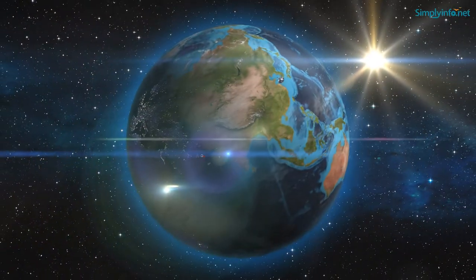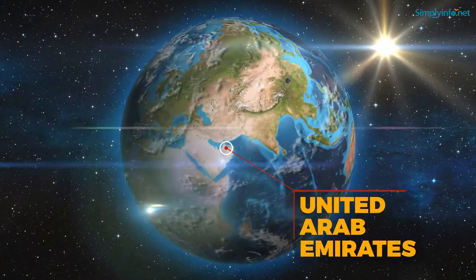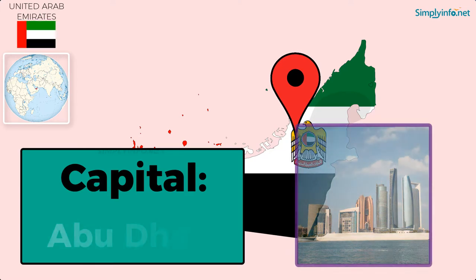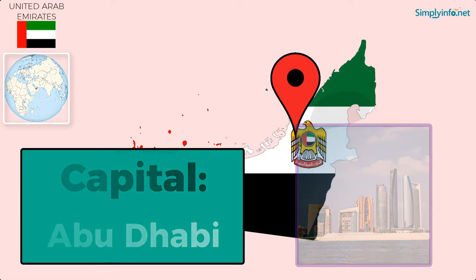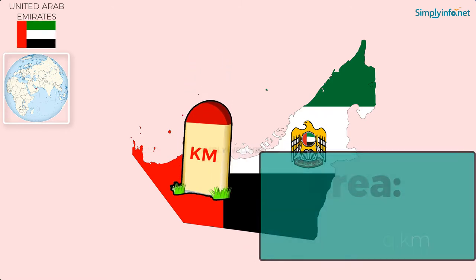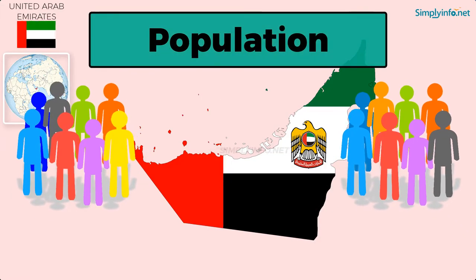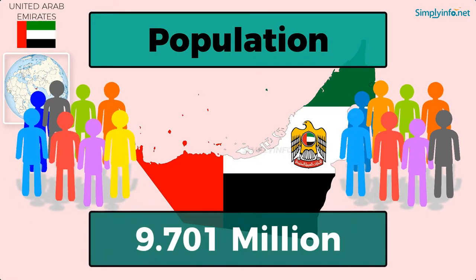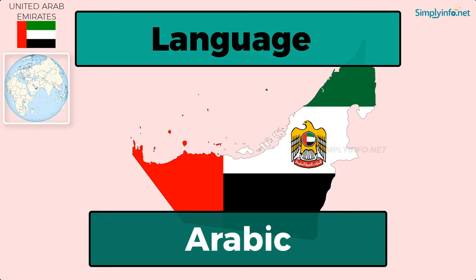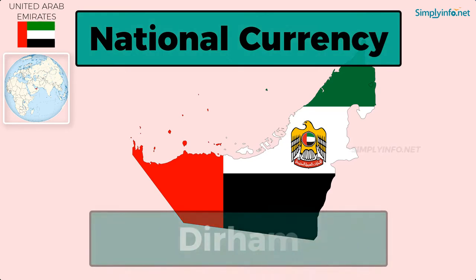Name: United Arab Emirates. Capital: Abu Dhabi. Area: 83,600 square kilometers. Population: as of 2018, it is 9.701 million. Language: Arabic. National currency: Dirham.